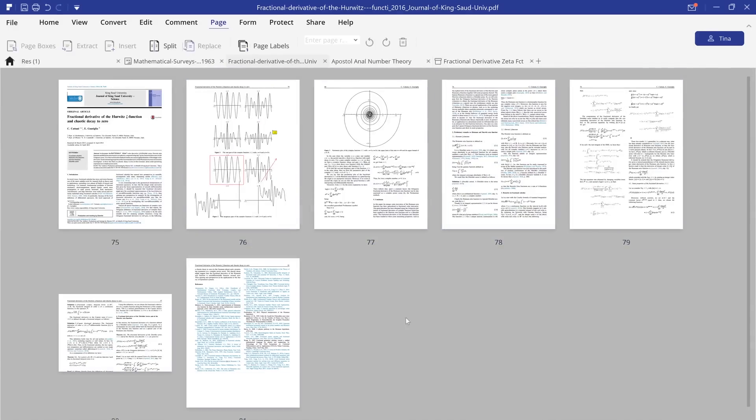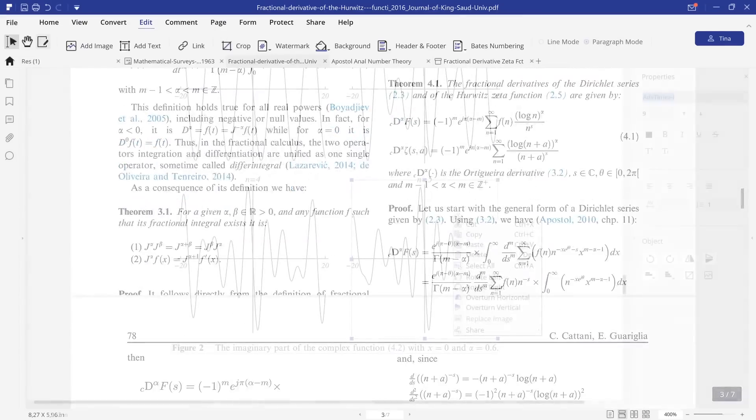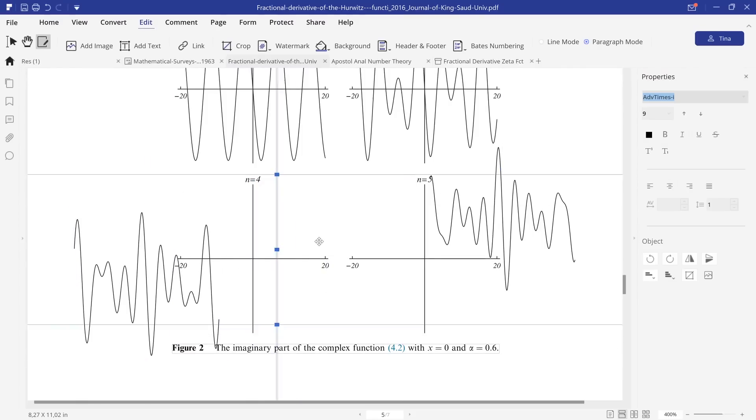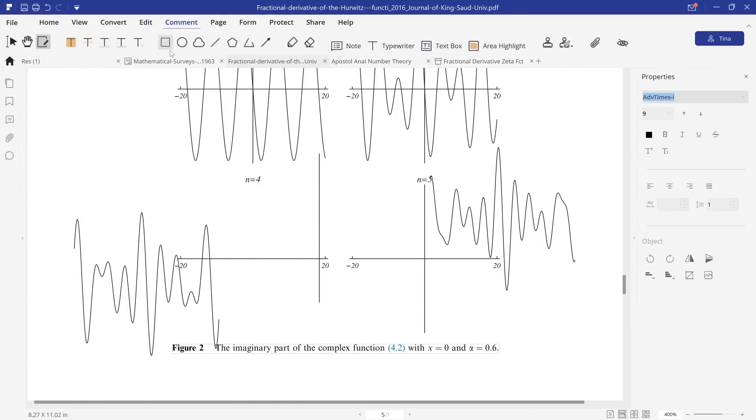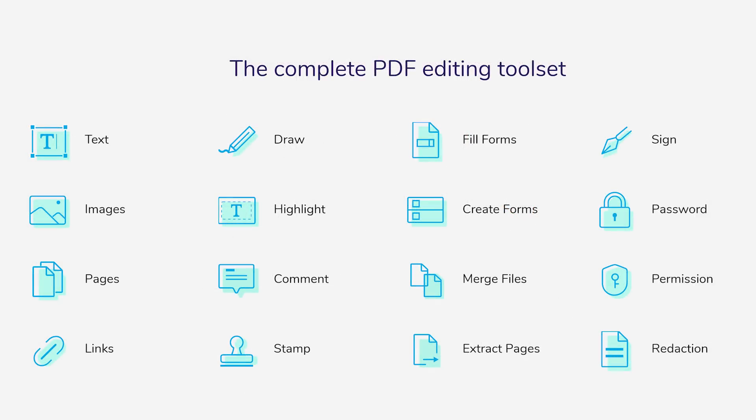One feature that I use a lot is the rearranging of pages feature. Go to the page tab and move the pages around freely. You are also able to delete certain pages or crop them into the size that you want. Also, do not miss out on all the other graph editing, picture saving, and form editing options that come with PDF element Pro.